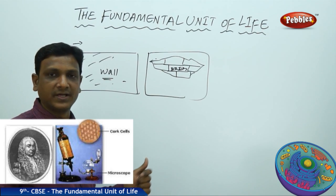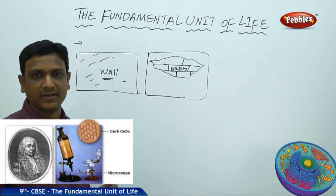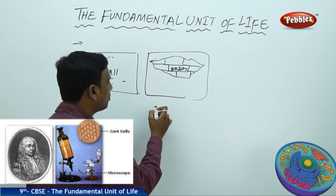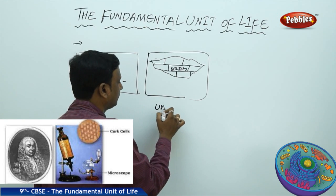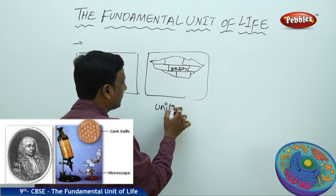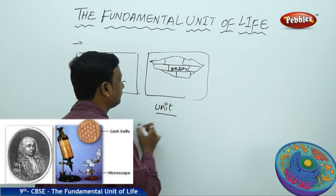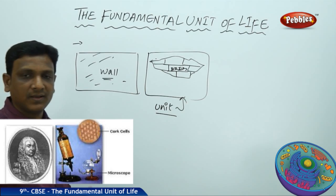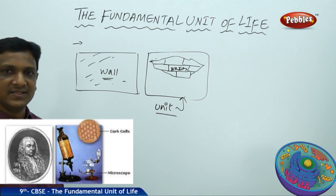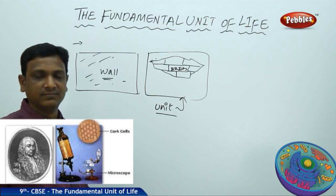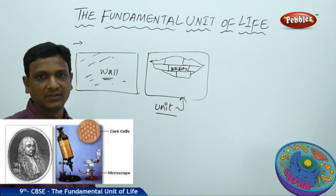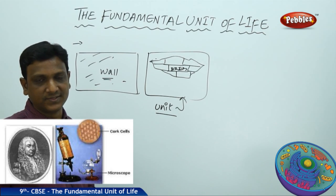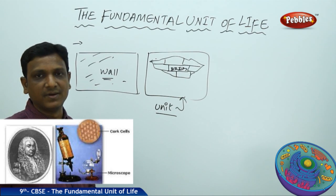A wall is made up of some bricks — 100 bricks, 200 bricks, 500 bricks. So a brick is a unit which makes up the wall. In the same way, in a similar fashion, living things are also made up of some basic units — fundamental units.